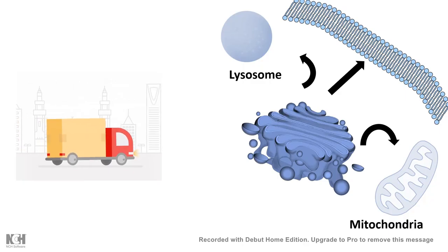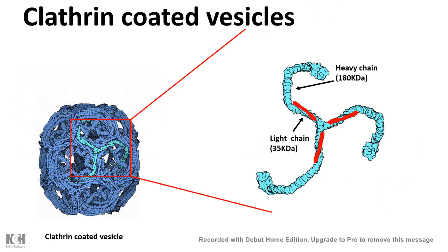So in this video, we would look at one kind of truck which is known as clathrin coated vesicles. So as the name suggests, it is clathrin coated.